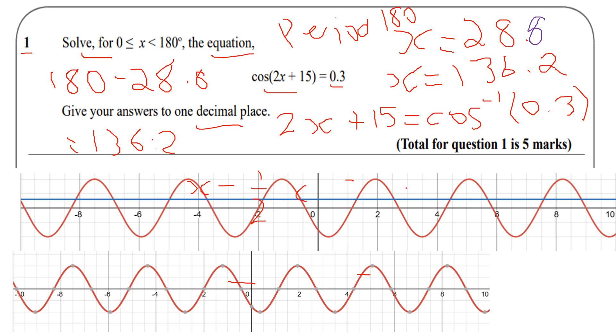The last part I should mention is revise graph transformations. Remember, if it's cos(2x), then the period halves. If it's cos(x/2), then the period actually doubles, and so on and so forth.